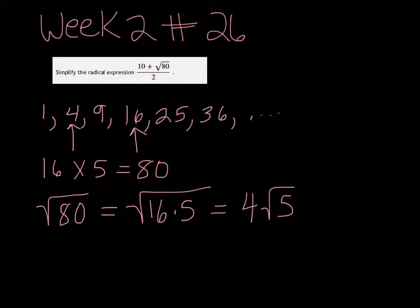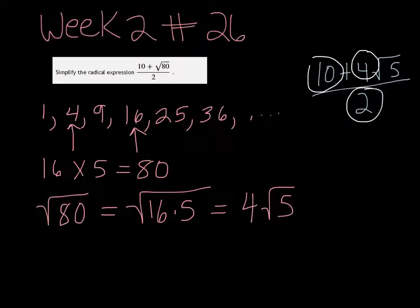So in this problem, we have 10 plus 4 root 5 all over 2. You can divide each one of these that I'm going to circle by 2. So you can only divide it if all three of them can divide by that same number. So you're going to get 5 plus 2 root 5.